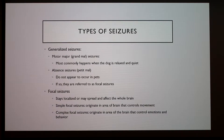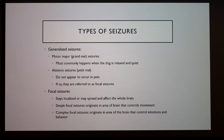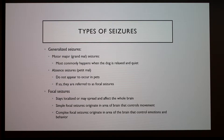There are different types of seizures — two main types. Generalized seizures, examples of which are grand mal seizures, most commonly happen when a dog is relaxed and quiet. With my dog, he's usually just laying down, either sleeping, and then he'll just get up and start having a seizure. Absent seizures or petite mal seizures don't typically occur in pets, but if they do, they're referred to as focal seizures, which stay localized or may spread and affect the whole brain.